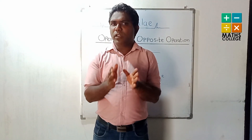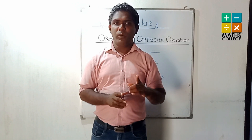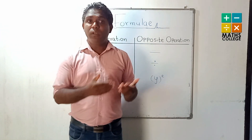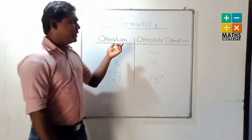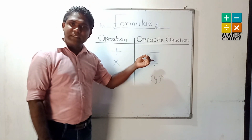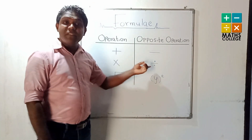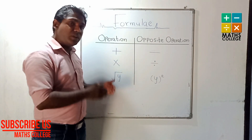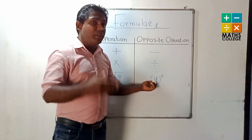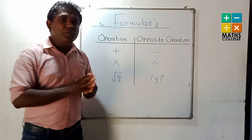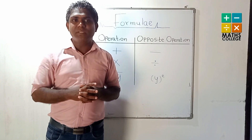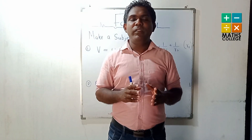Before solving problems with formula, you have to know operations and their opposite operations in mathematics. Look at the board — you can see here: the opposite of addition is subtraction; the opposite of subtraction is addition; the opposite of multiplication is division; the opposite of division is multiplication. And also, we learn at Grade 10: the opposite of square root is square, and the opposite of square is square root. Keep this in mind and you can solve formula problems very easily.